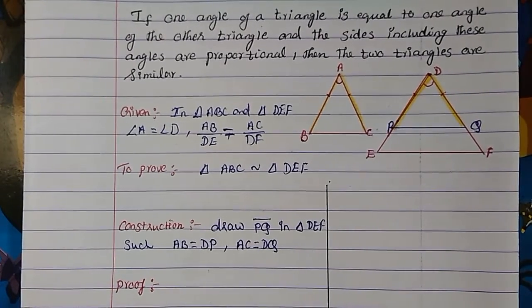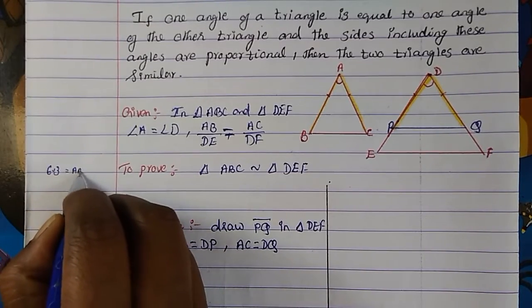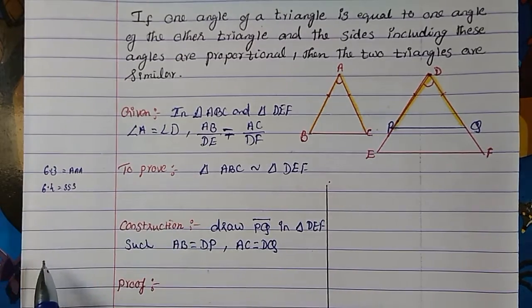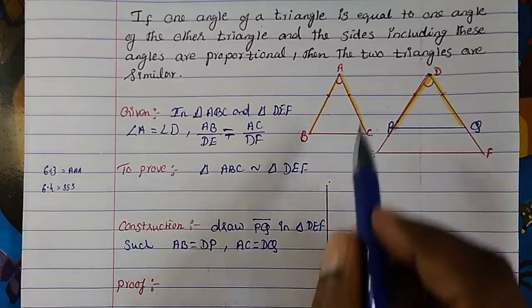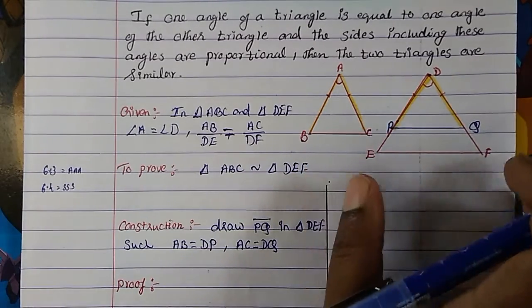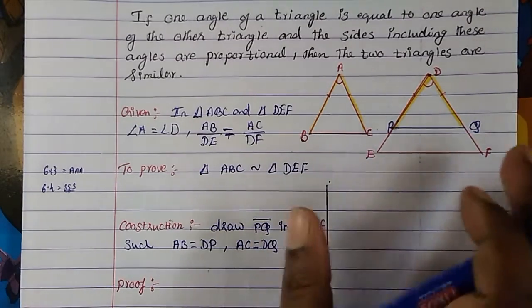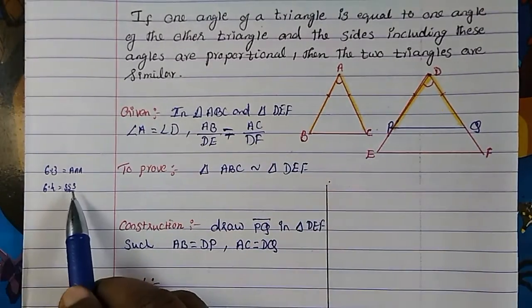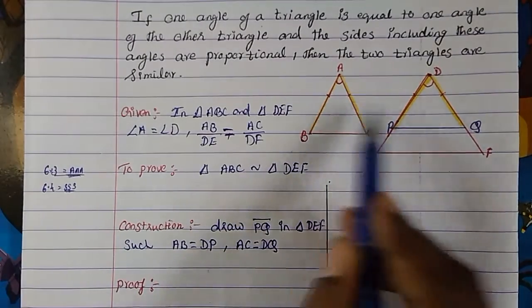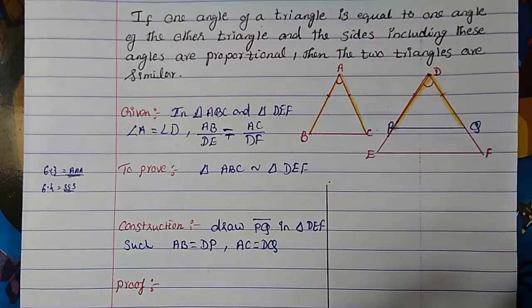Now for the proof, we have studied Theorem 6.3 (AAA criteria) and 6.4 (SSS criteria). If we prove that all three angles of both triangles are equal, we can prove they are similar. Or we can prove by SSS. I am going by proving all three angles are equal, and by that I will prove both are similar.